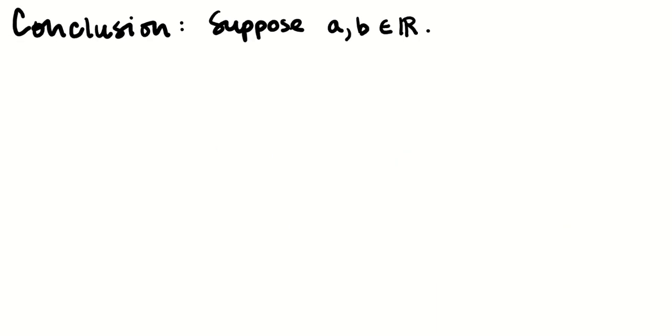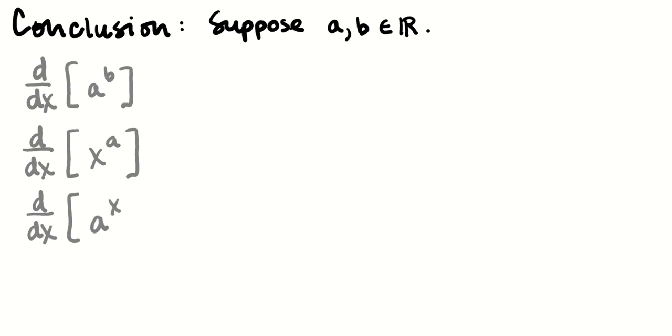All right. So in conclusion, let's talk about all of the derivative rules that go around exponential scenarios. So suppose a and b are two real numbers. I'm going to be interested in the derivatives of, I think, four things: a^b, x^a, a^x, and x^x.